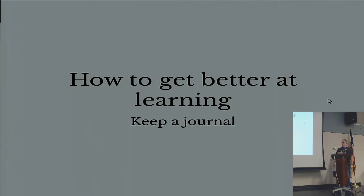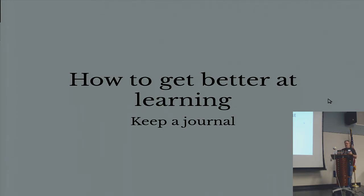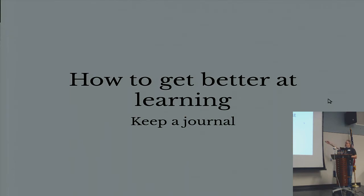One way to get better at learning is to keep a journal. I don't do this nearly as well as I should. I use a program called Journal — JRNL — where I just type little notes. The idea isn't to make a perfect record but to get thoughts out of my head onto a page, to serialize my thinking so I can refer to it later. Keeping a journal is a really great habit — I need to do better at it, but again, making mistakes.